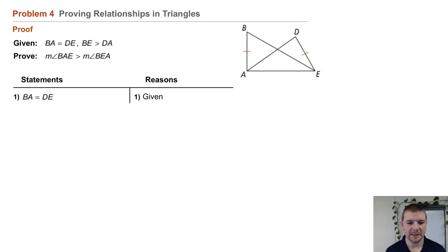Statement 1: BA equals DE, that's given. Statement 2: AE equals AE, of course by the reflexive property of equality.